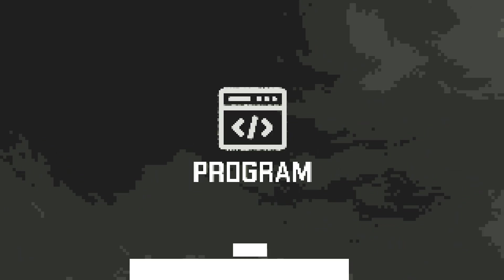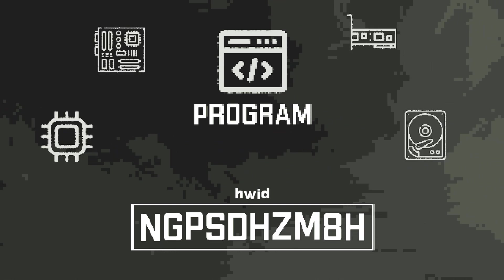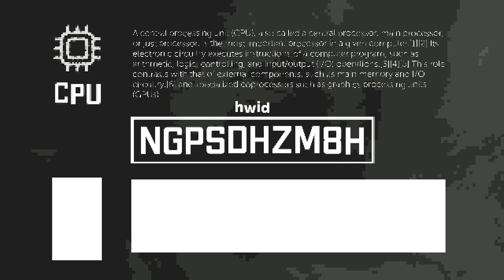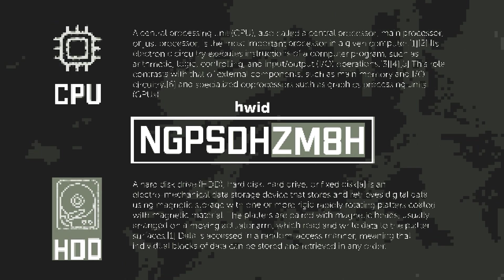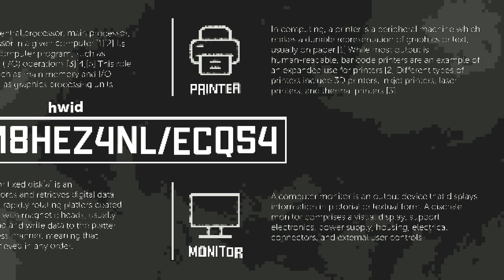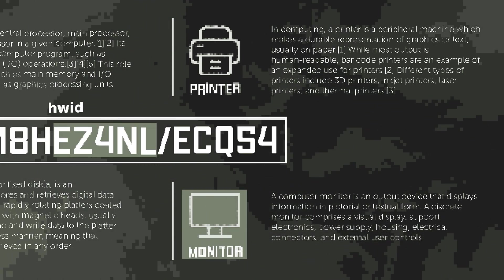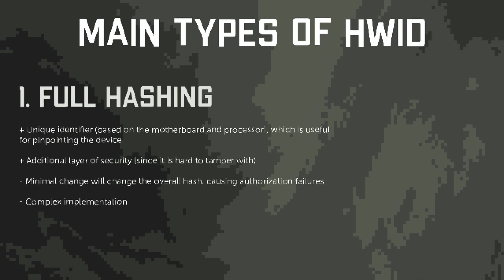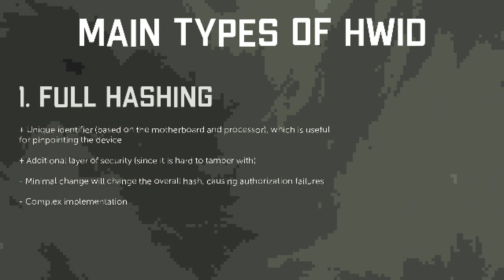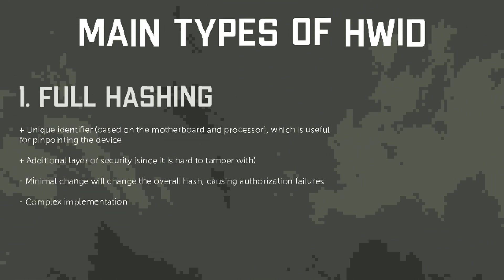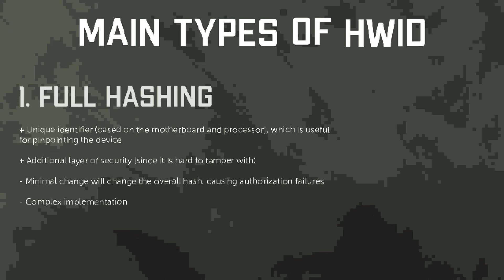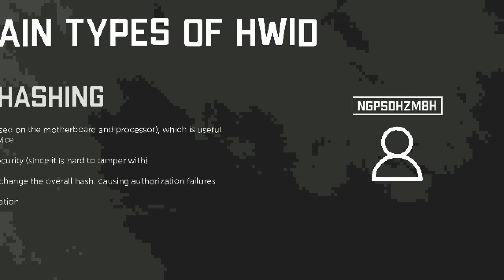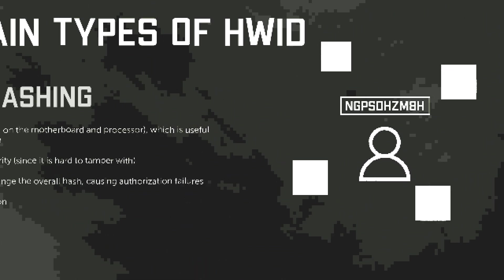Programs generate HWID based on different datasets depending on the level of protection. For example, one HWID may consist only of processor and hard drive data, while another may include network parameters or connected devices, like a monitor or even a printer. There are two main approaches to creating an HWID. The first is full hashing, where the identifiers of all components are combined and encrypted into a single common hash assigned to the user — a single number formed from all system parameters.